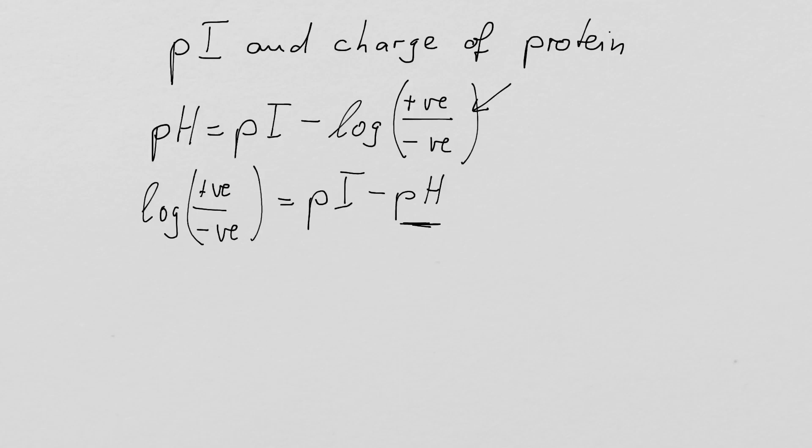So let's say we want ten times more positive charges. What we need to do is we need to adjust the pH in the following way. So we have log 10 to 1 equals pI minus pH.